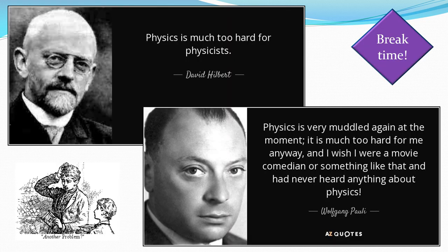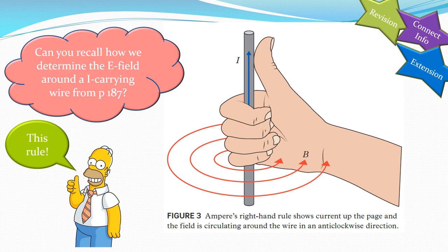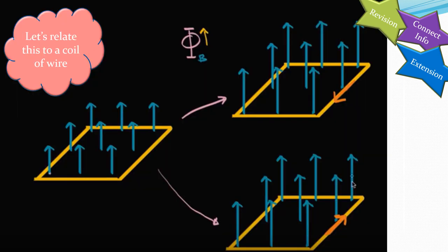It's probably a good time to have a break. Let's revise: how do we determine the magnetic field around a current-carrying wire? We have the current flowing in the wire, and a magnetic field will be set up around that wire — that's the rule shown on screen.